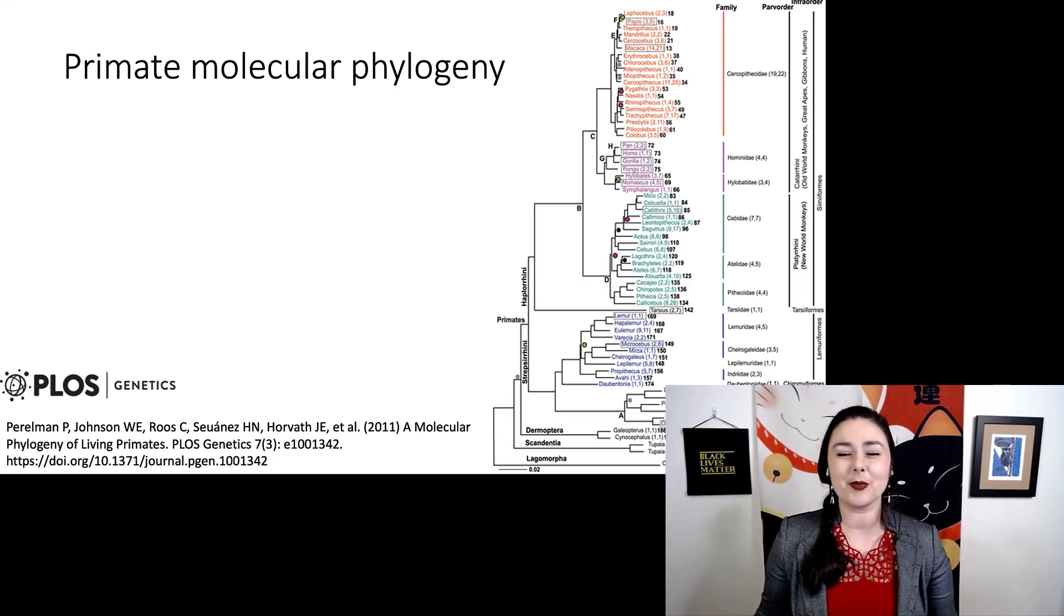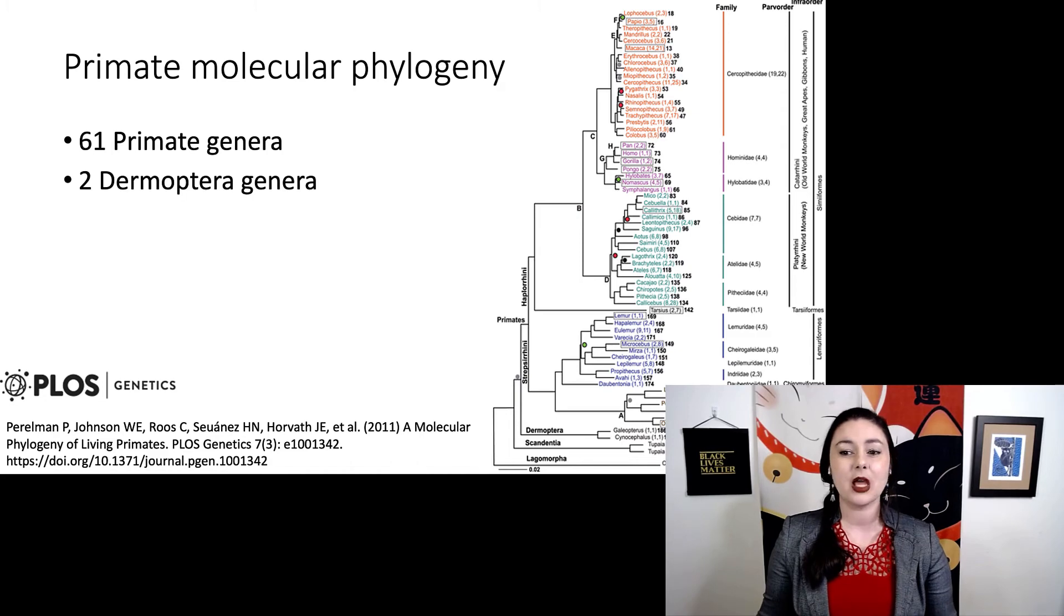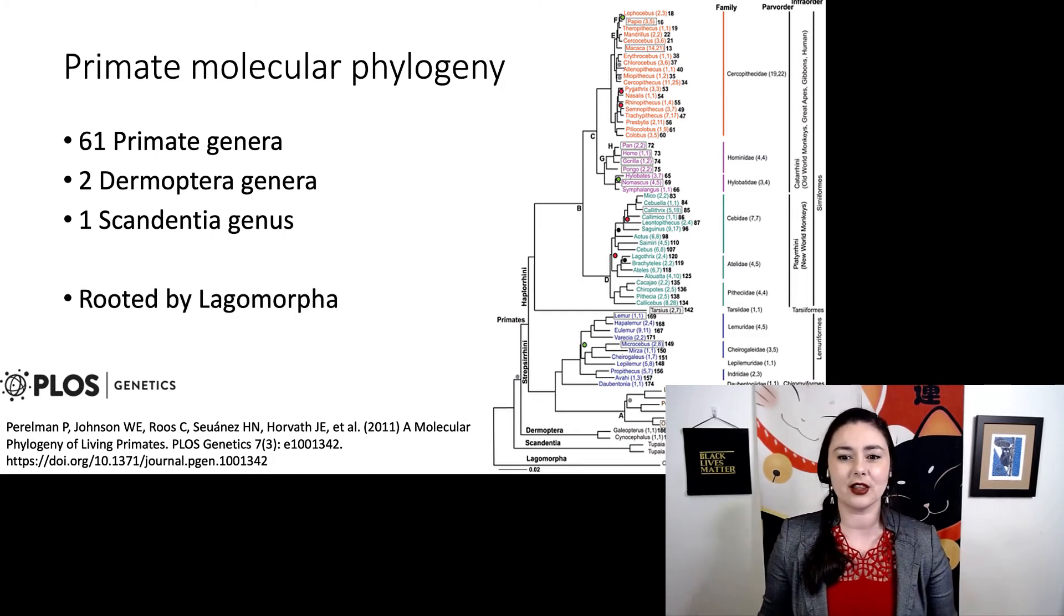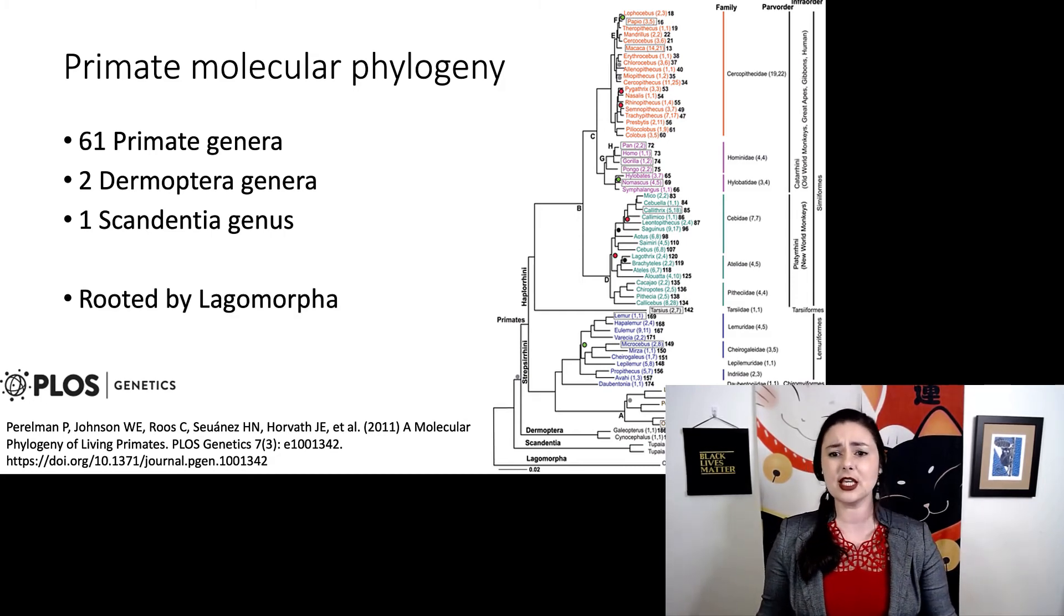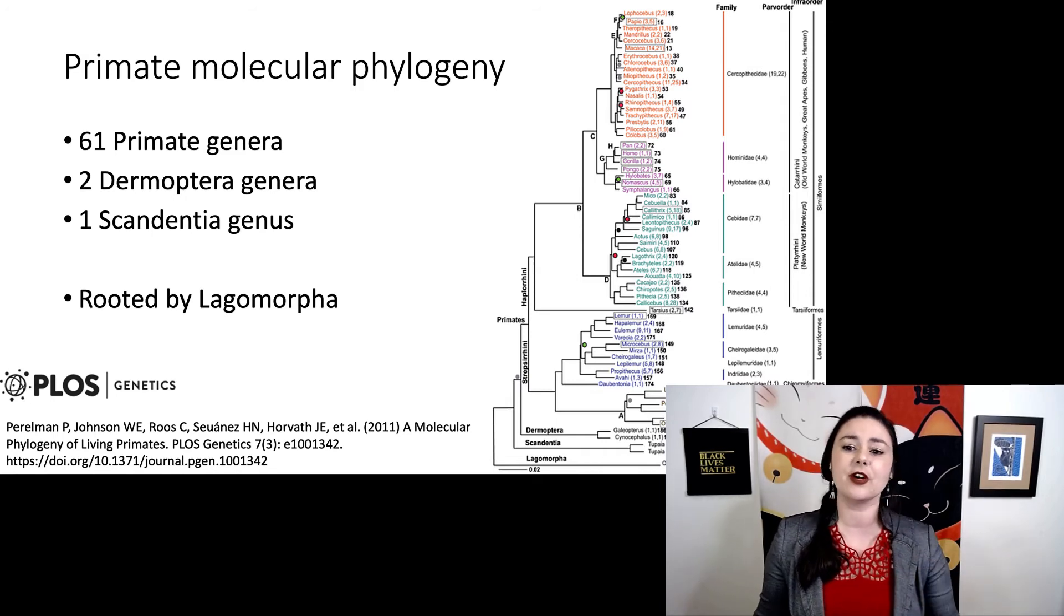And here's an example from primate molecular phylogeny. So we actually have 61 primate genera, two dermoptera genera, and one scandentia genus. Just to help us understand who's more closely related to whom. And it's all rooted by lagomorpha. But you can see we've colored them in and each monophyletic clade has the same color. And that also reflects the different taxonomic groupings here.